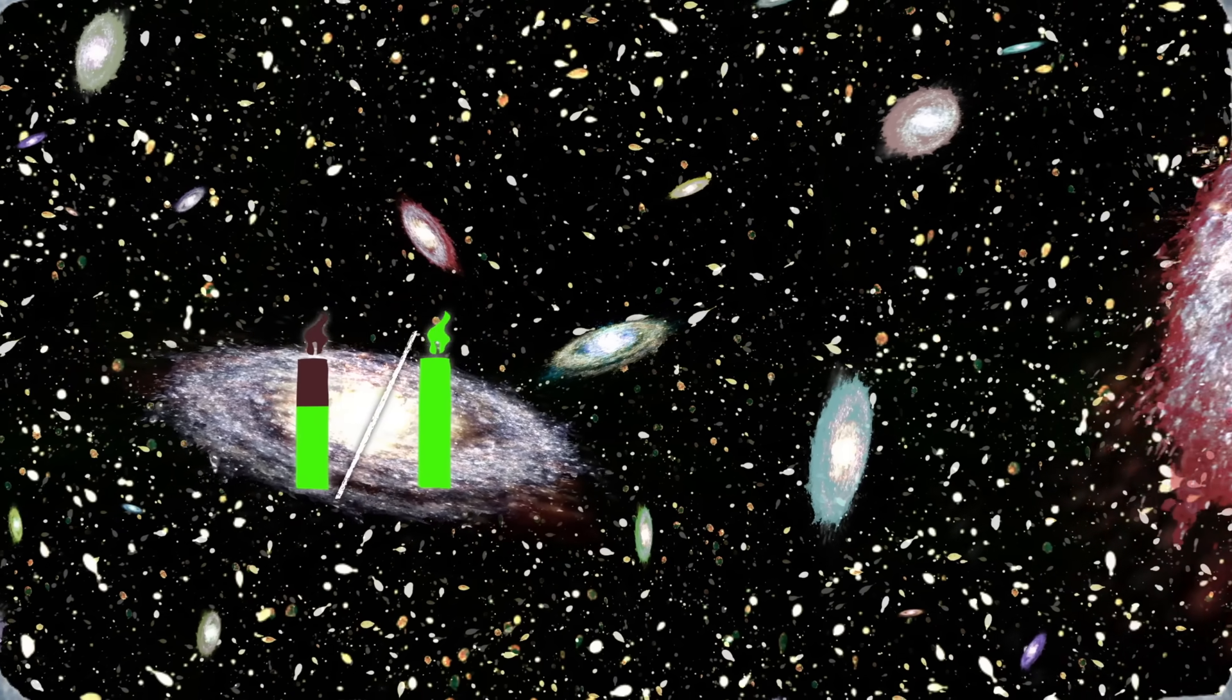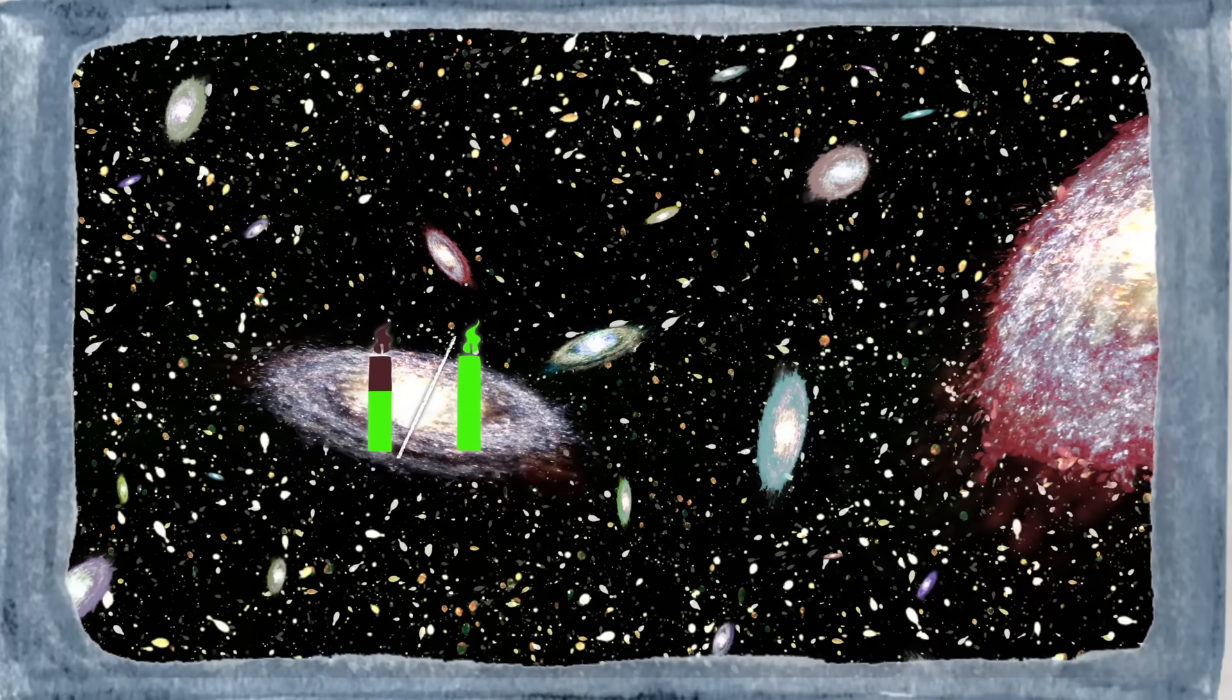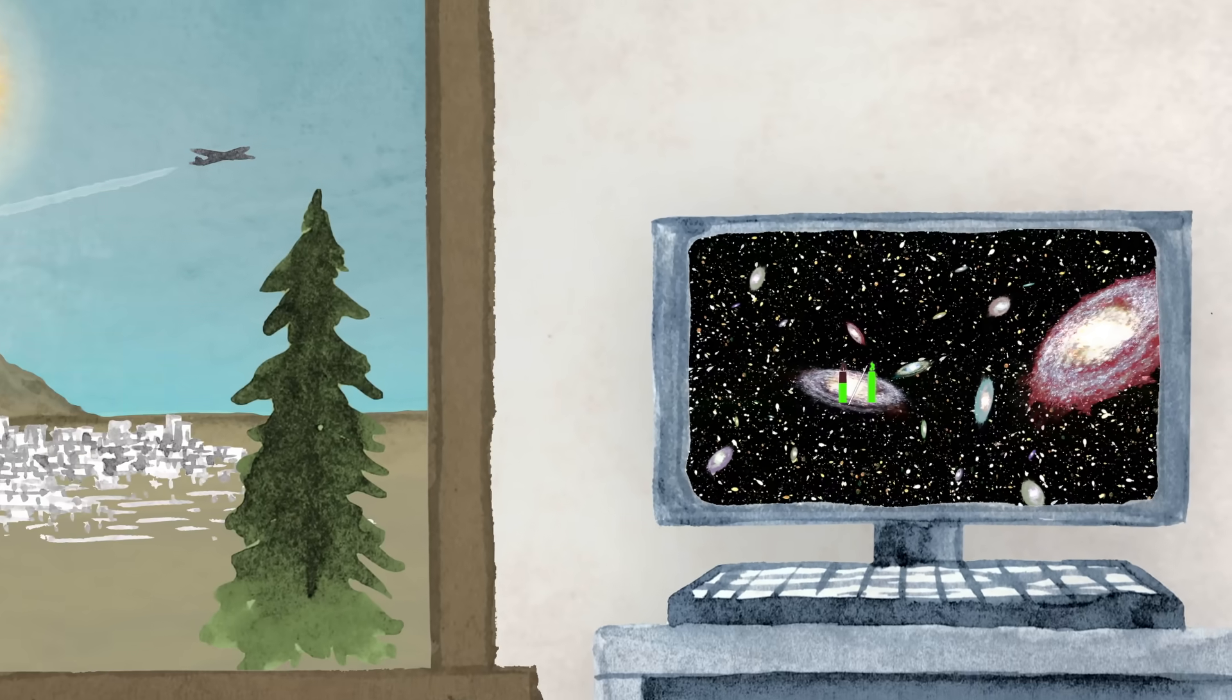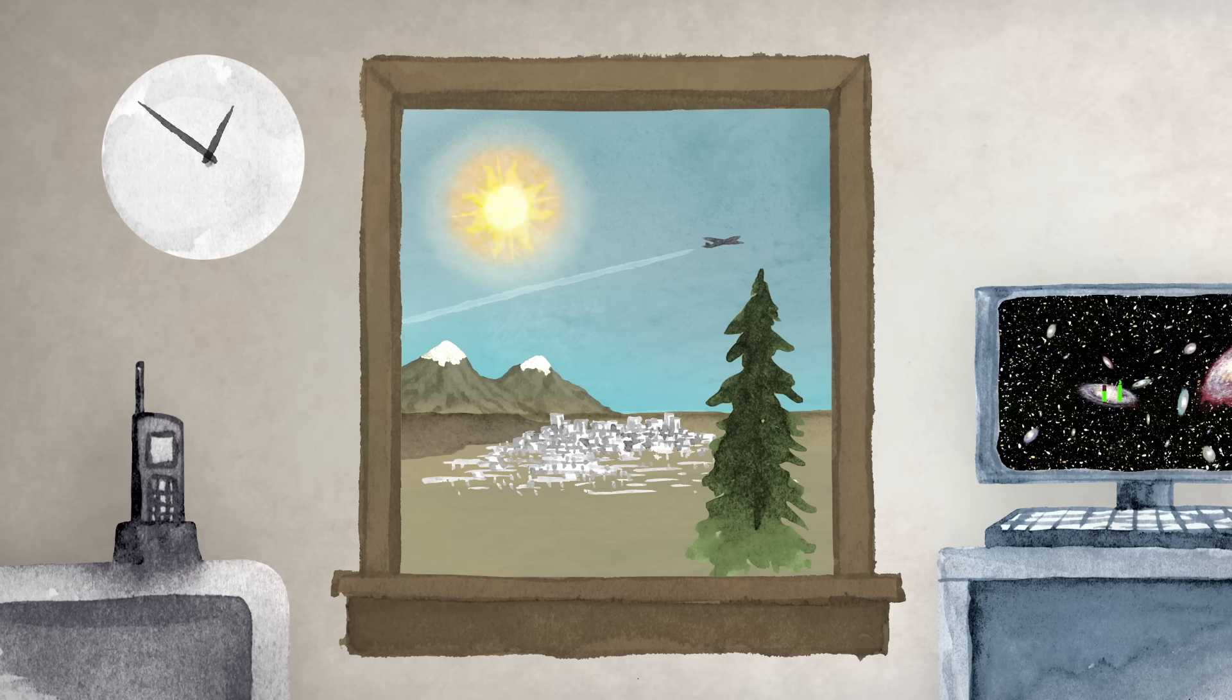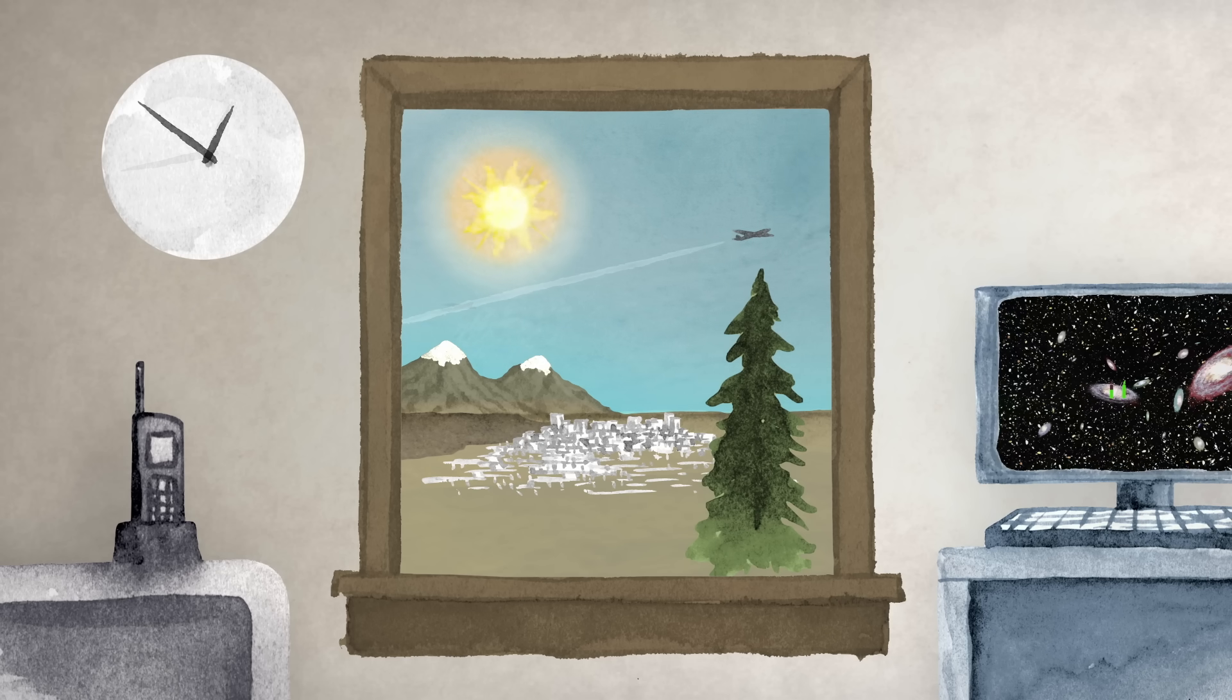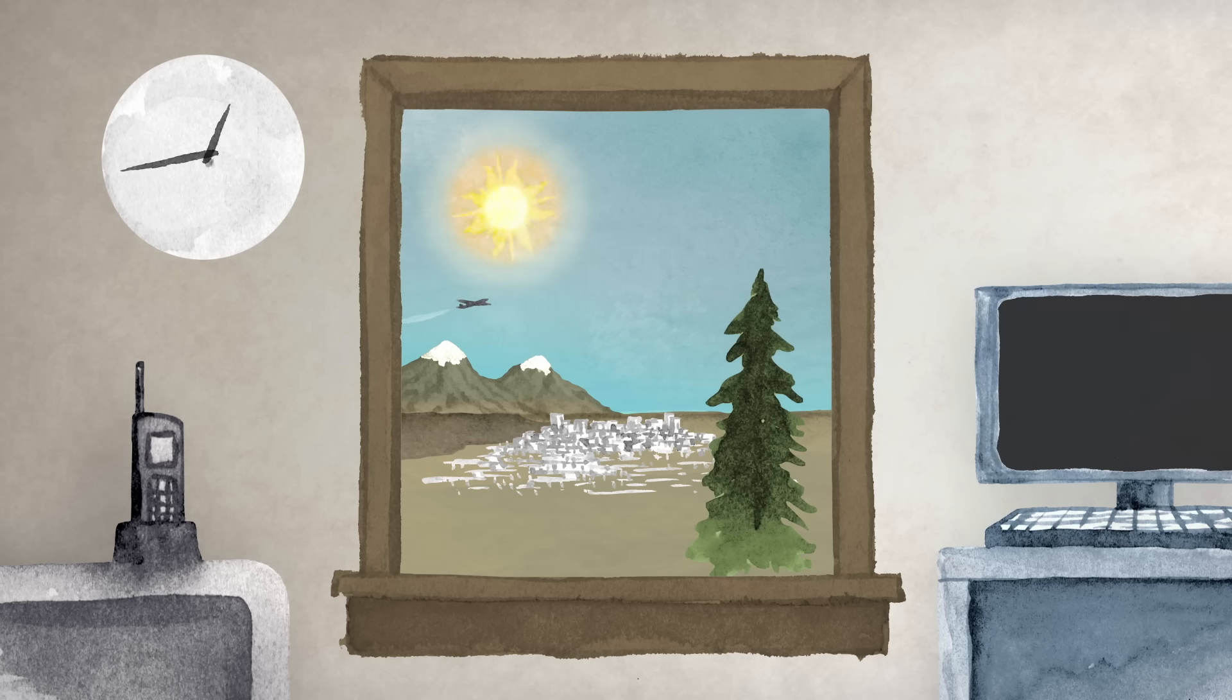But why is it important to see such distant objects anyway? Well, remember how fast light travels. For example, the light emitted by the sun will take eight minutes to reach us, which means that the light we see now is a picture of the sun eight minutes ago.